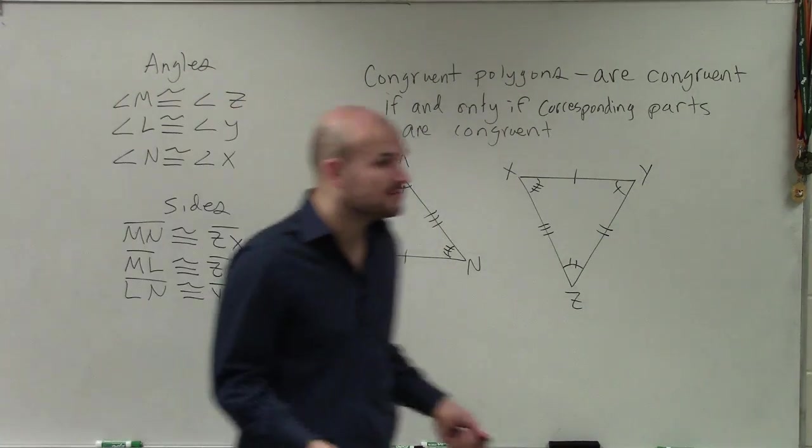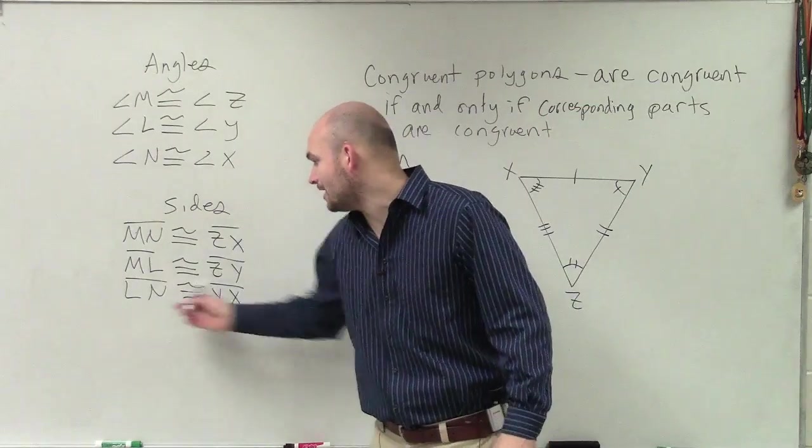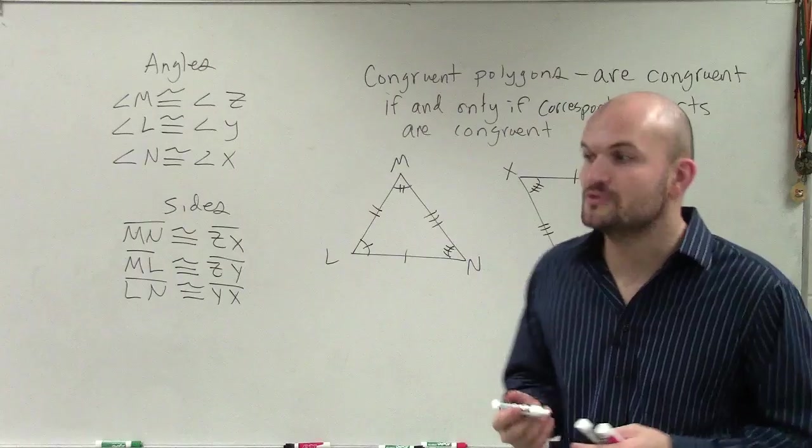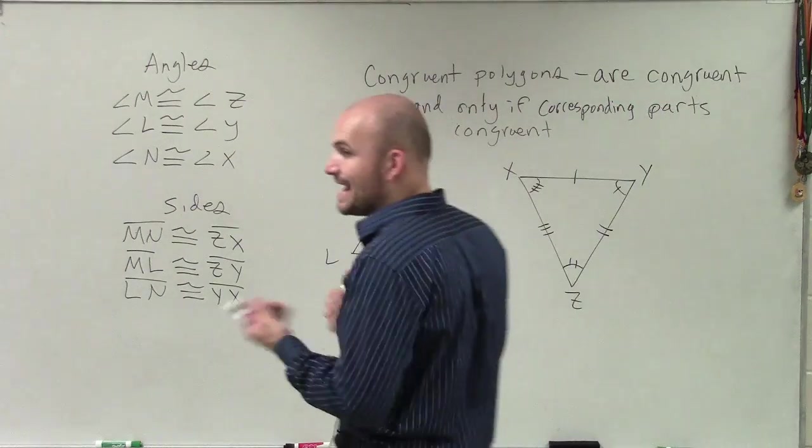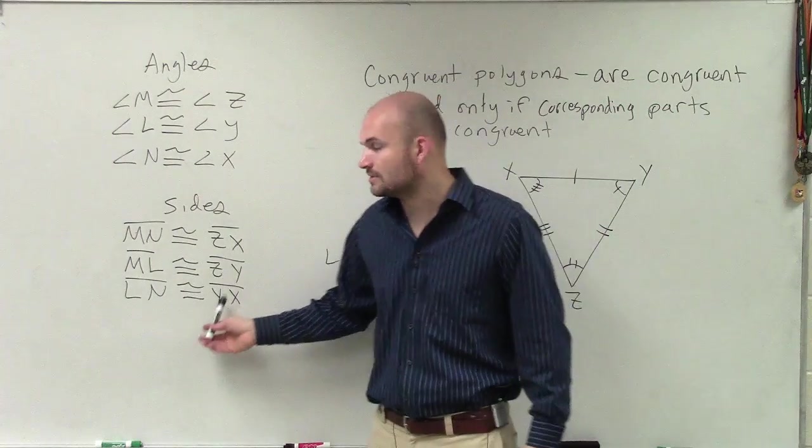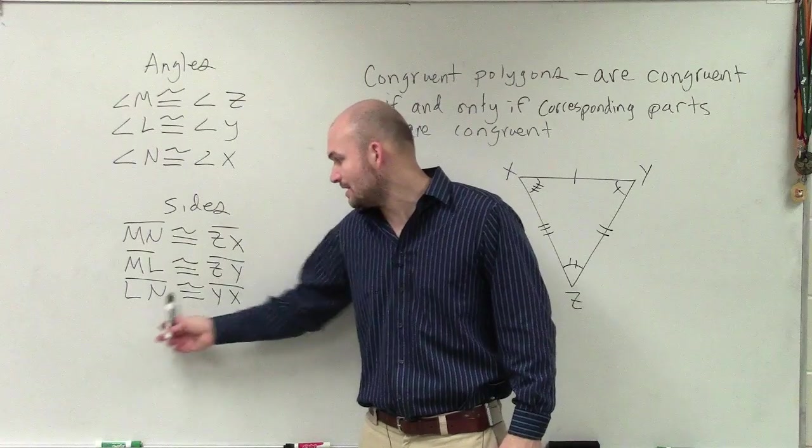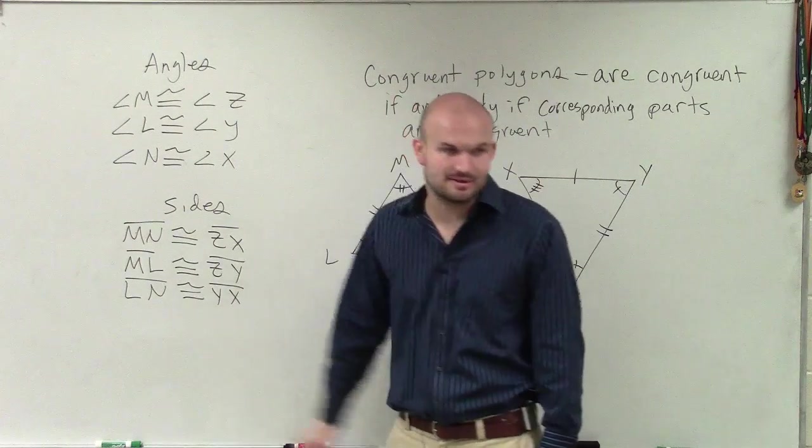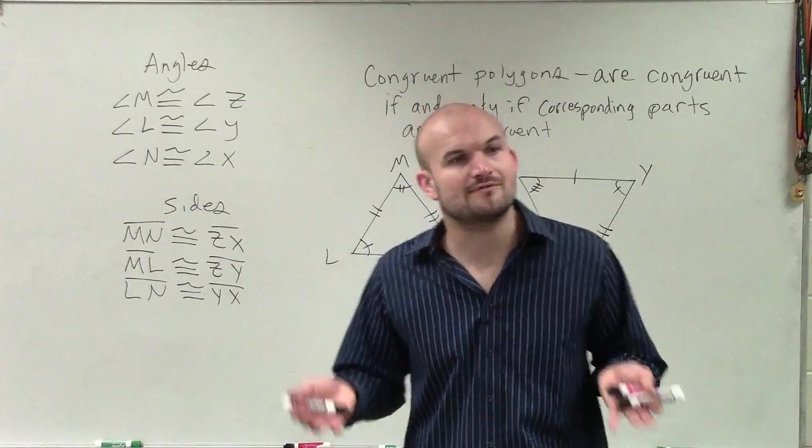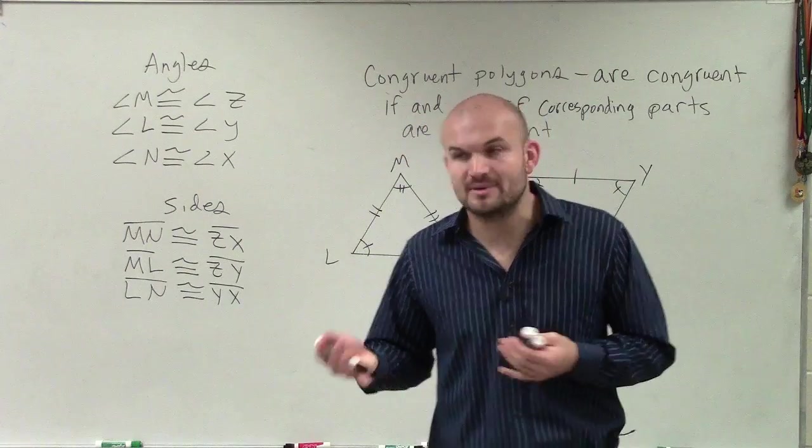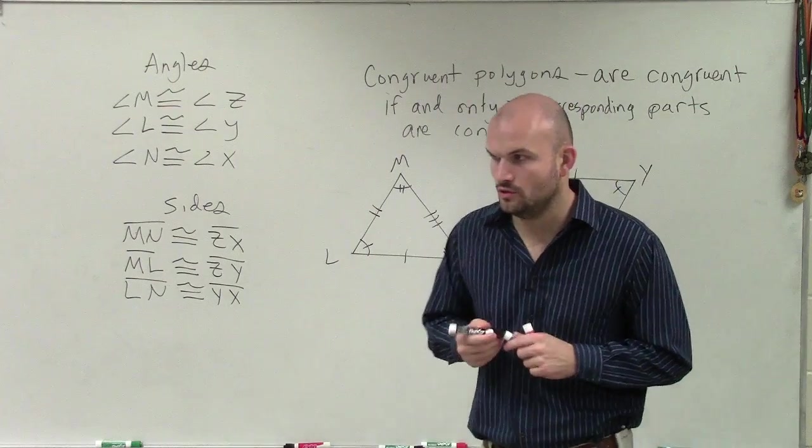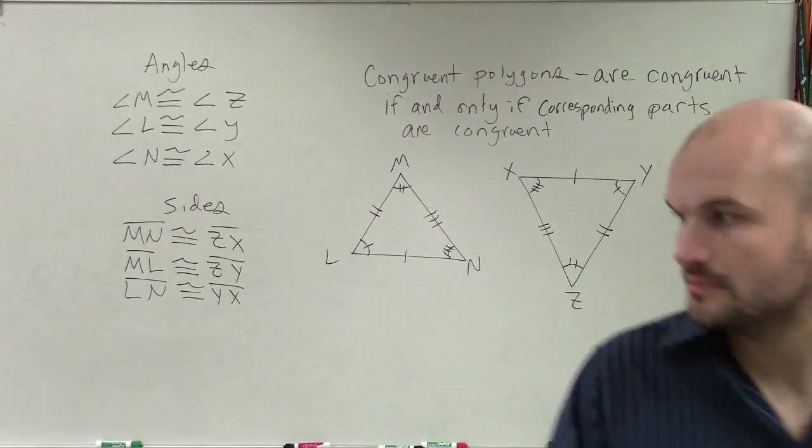Now you can rewrite those the other way. I could also write this as NL is congruent to XY, as long as I'm going in the same direction, as long as I have my corresponding angles in the same direction. So LN to YX or NL to XY. As long as you have corresponding angles in that statement, you're going to be all right. OK, cool. Got it, Dominic. Good.